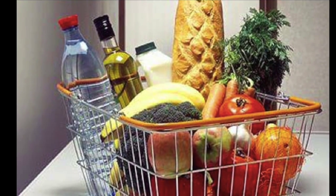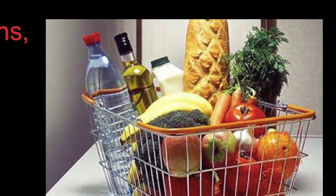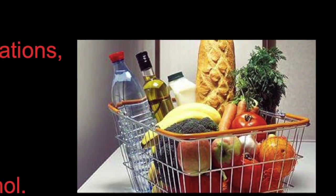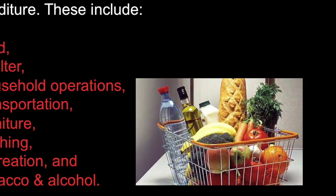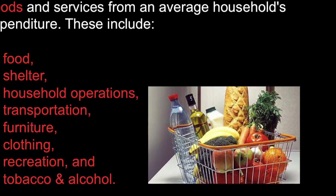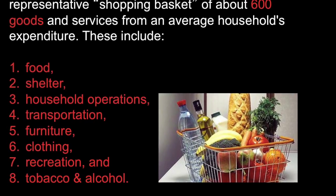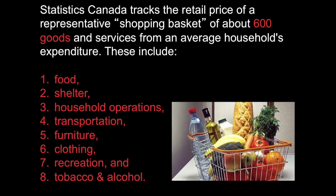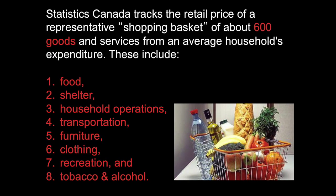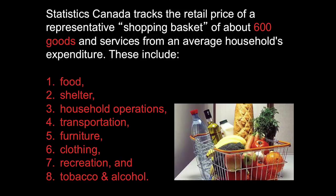It does this by tracking a basket of goods. This basket of goods has eight different categories of goods and services, including food, shelter, household operations, transportation, furniture, clothing, recreation, and tobacco and alcohol.